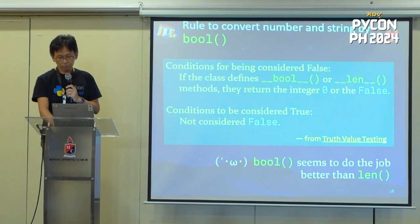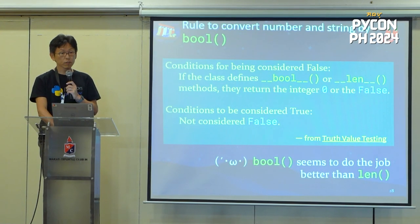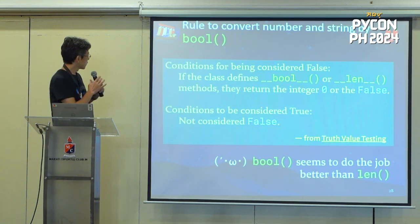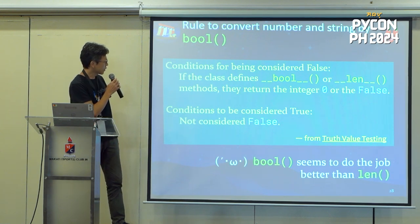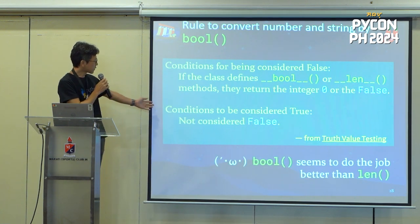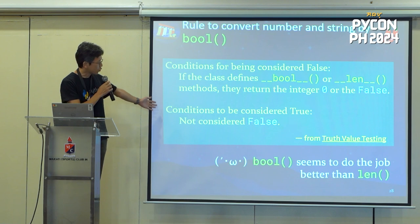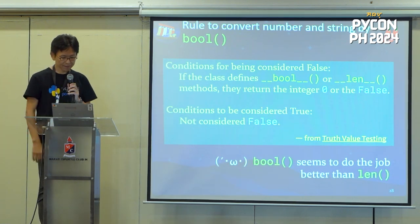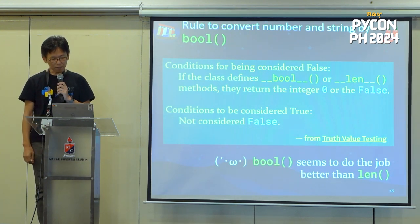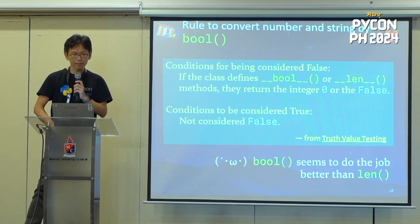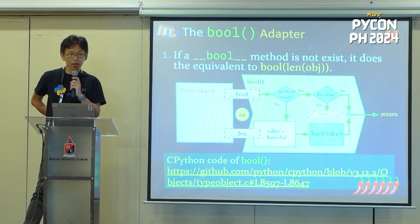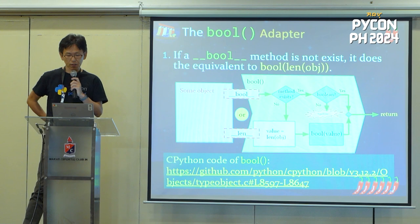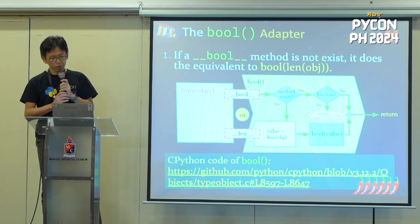Rule for converting numbers and strings by bool. The following is a quote from the official reference: 'If the class defines `__bool__` or `__len__` method, they return the integer 0 or False to be considered false. Otherwise considered true.' This means there is a bit more checking involved — the bool adapter seems to be doing more work. Let's introduce the mechanism of the bool adapter with a diagram. If there is no `__bool__` method, it does something equivalent to `bool(len(object))`. First, let's look at the `__bool__` method path.